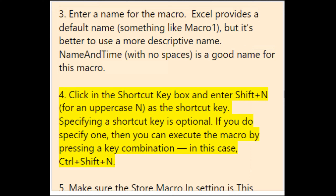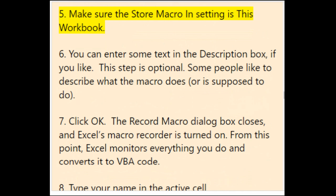Specifying a shortcut key is optional. Step 5: make sure the Store Macro In setting is 'This Workbook.' Step 6: optionally enter a description of what the macro does. Step 7: click OK — the Record Macro dialog closes and Excel's Macro Recorder is turned on. From this point, Excel monitors everything you do and converts it to VBA code. Step 8: type your name in the active cell. Step 9: move the cell pointer to the cell below and enter the formula =NOW() to display the current date and time.